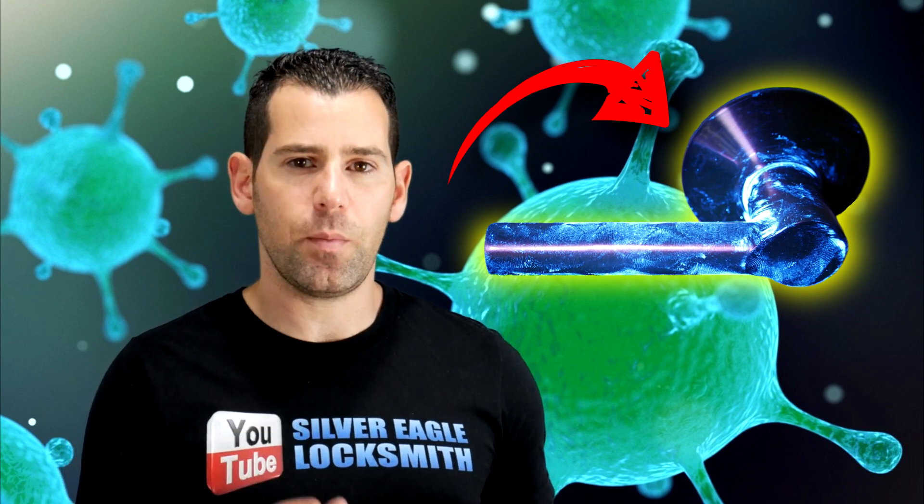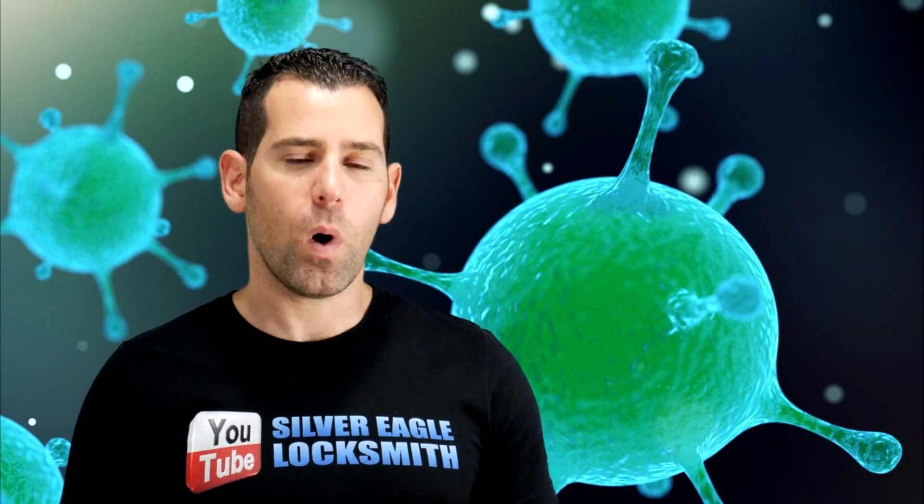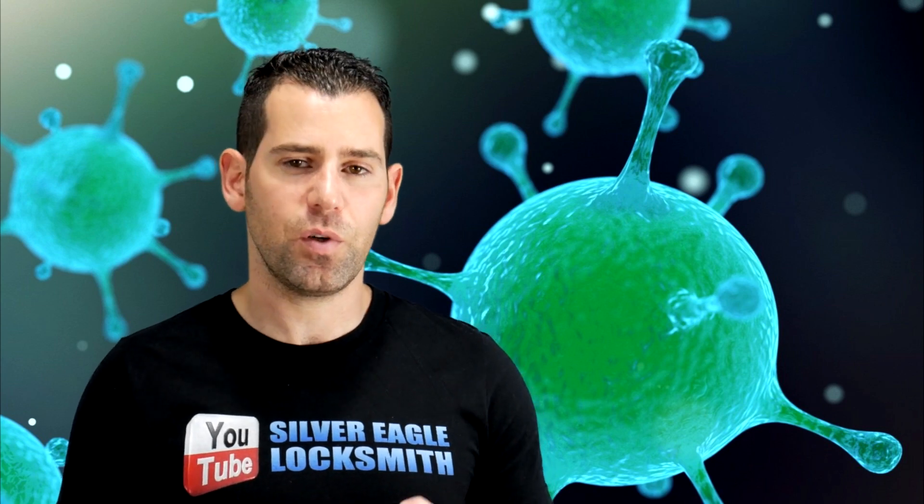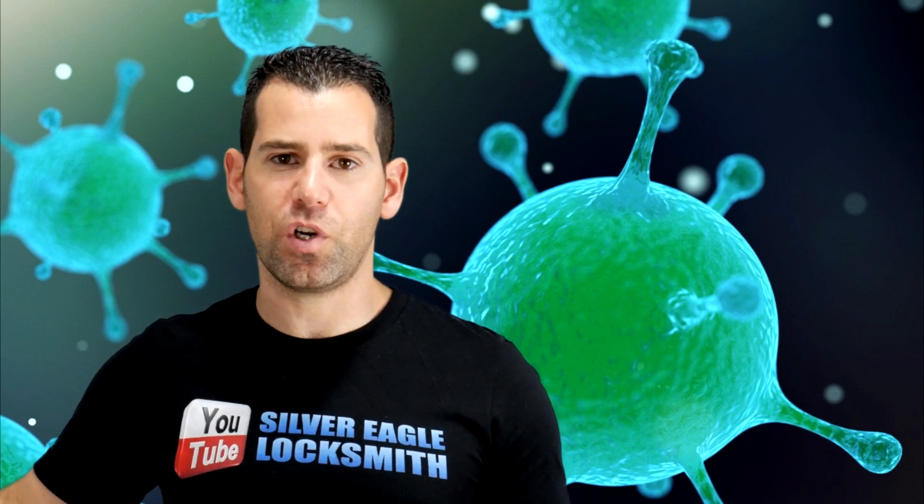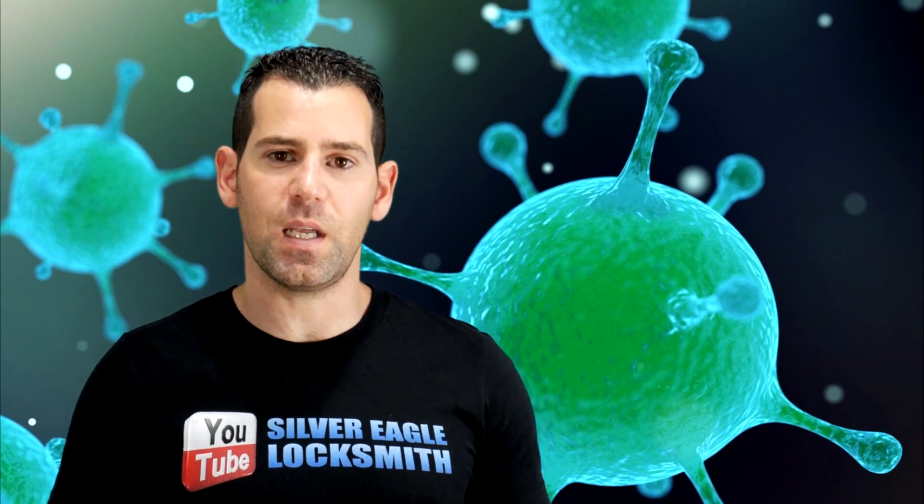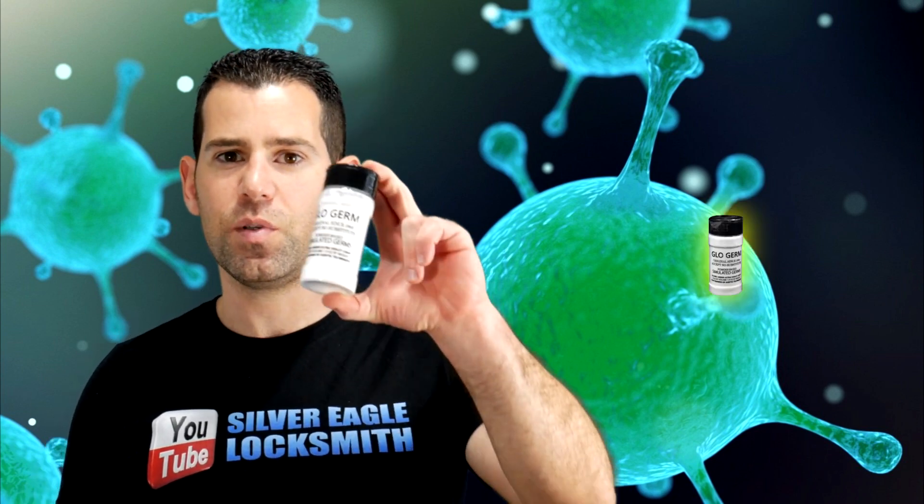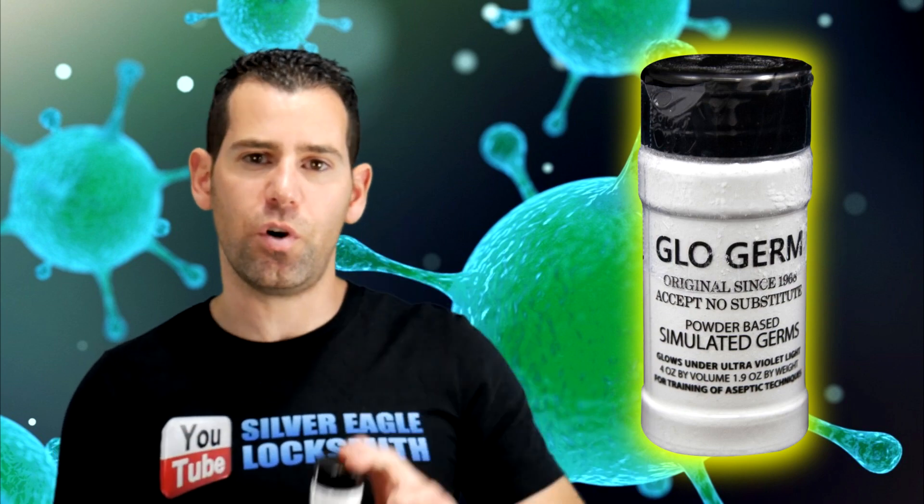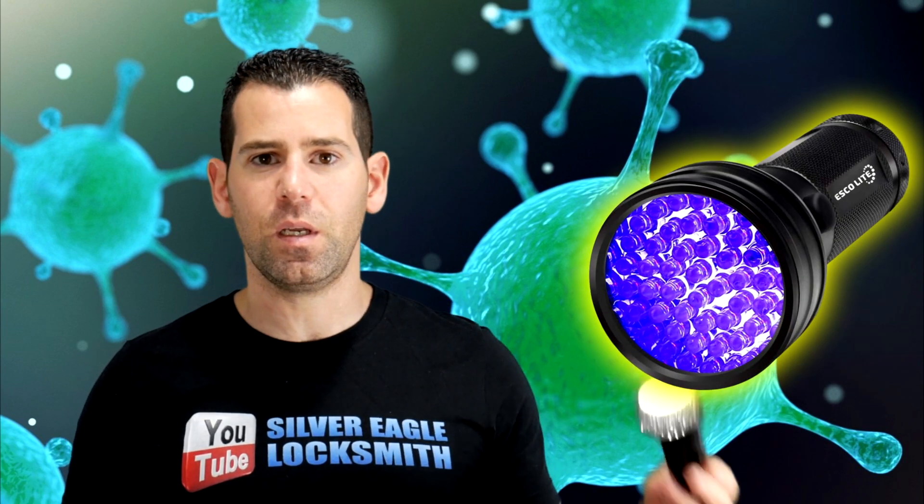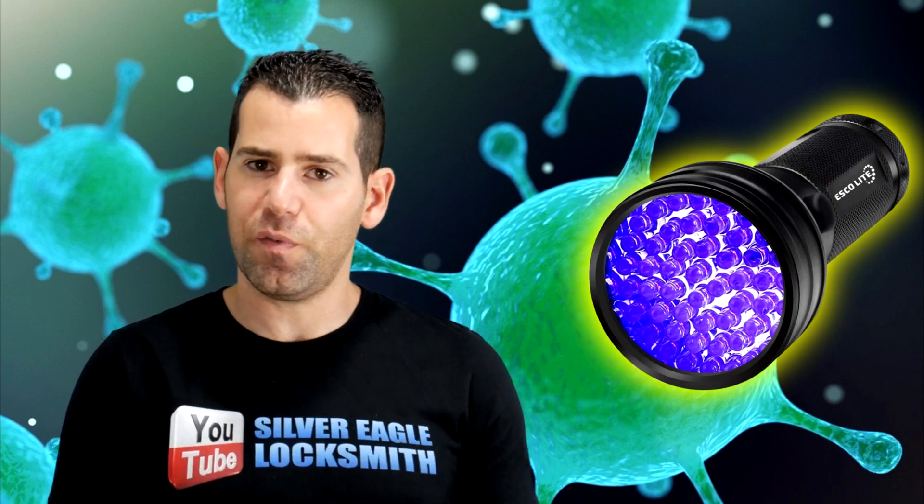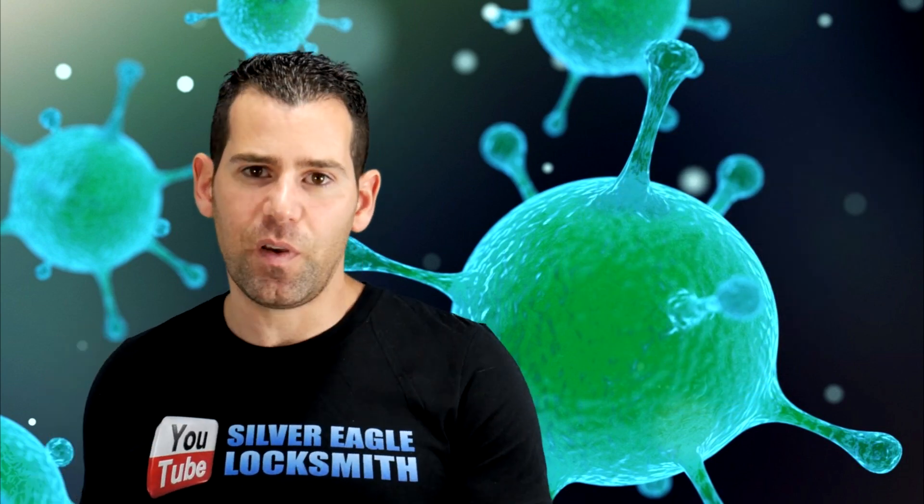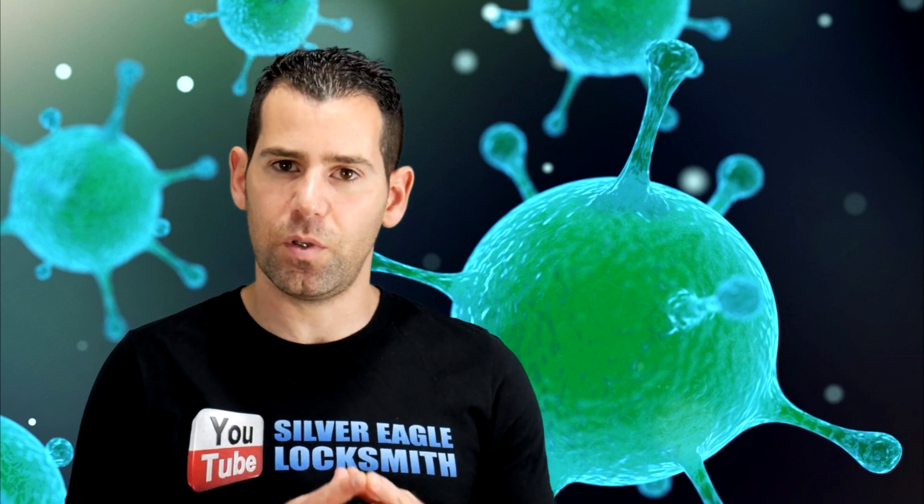In today's video, I will demonstrate and show you what happens when you touch a dirty lock and where you leave all the germs and all the objects that you touch right after. Using the glow germ product and a UV black light, we will track down all the objects and surfaces that you touch, even if your hands were clean right before you enter the door.